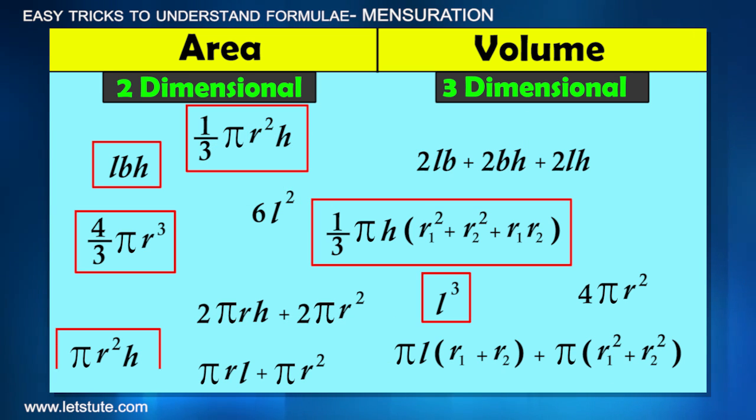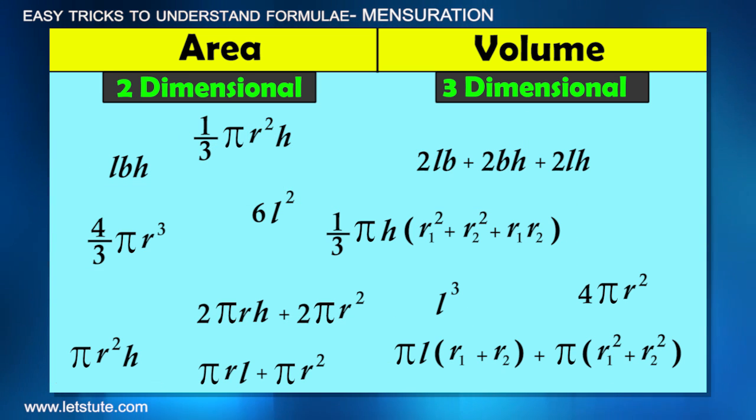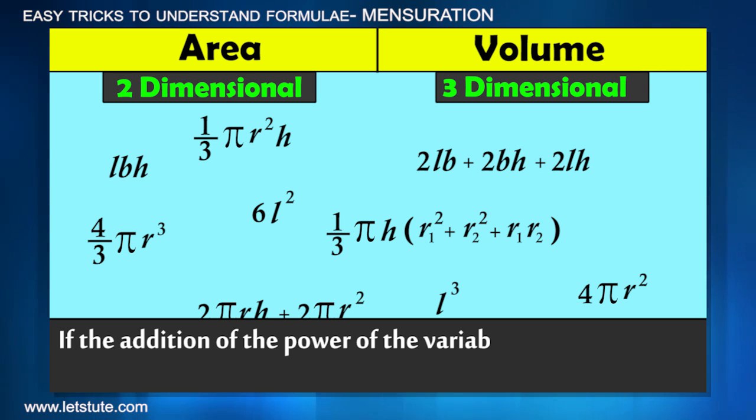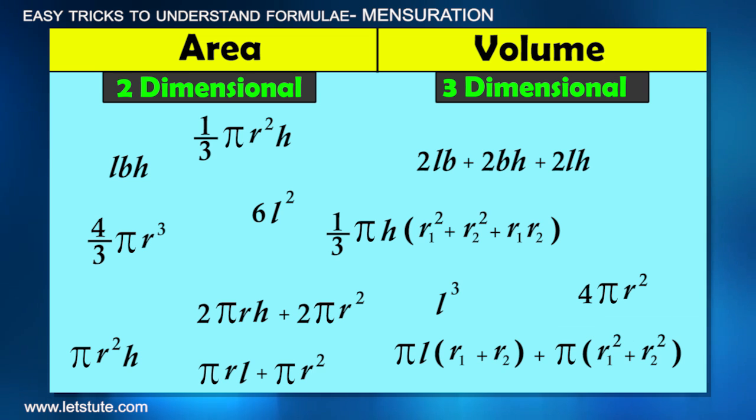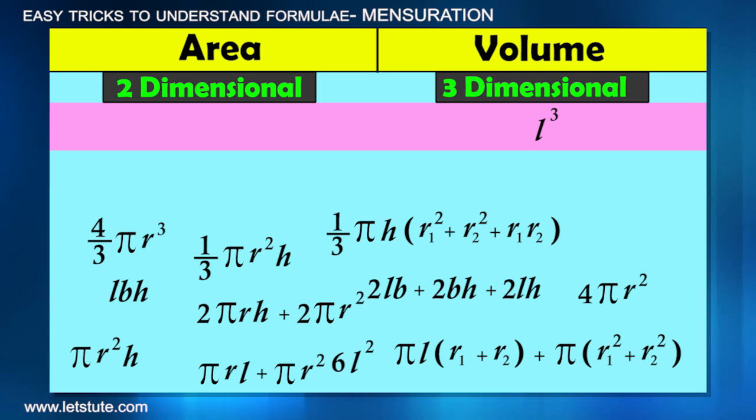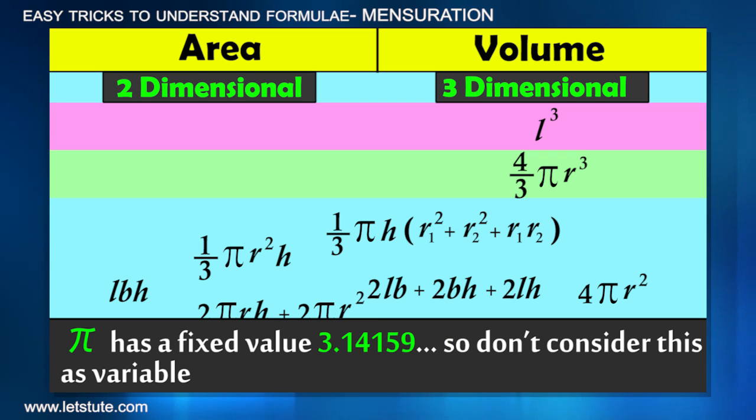These are all the formulae to calculate volume, and if the addition is 2, it's the formula to calculate space taken by two-dimensional objects, i.e. area. So L³ is three-dimensional, it's the formulae to calculate volume. 4/3 π r³ is also three-dimensional. One thing you must remember is, π is not a variable, it's a constant.